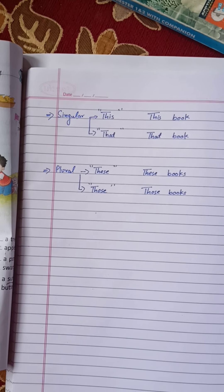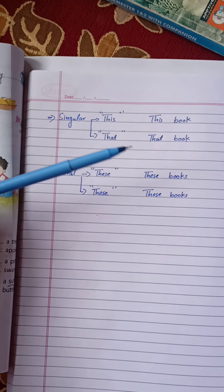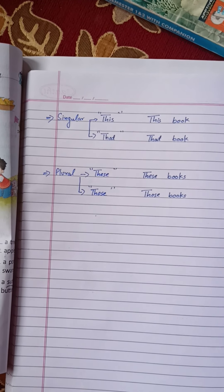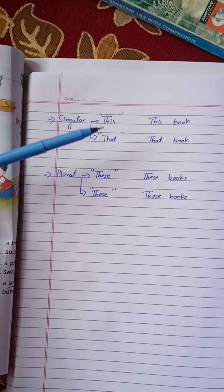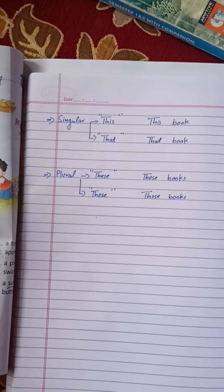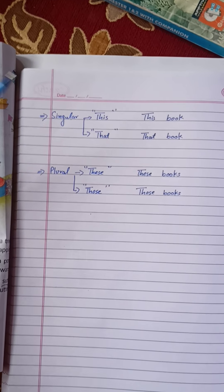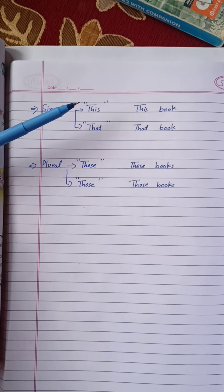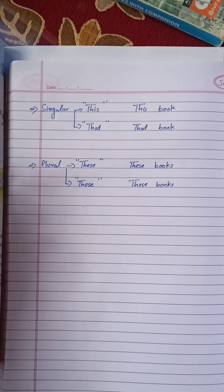When singular, we use 'this.' When we show one thing that is near, we say 'This is a pen.' This is a pen — meaning that one book, that one pen nearby.